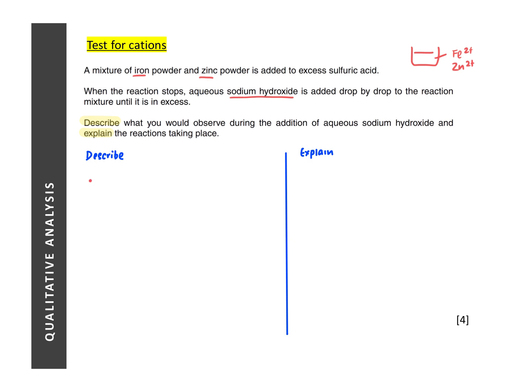So description will be, you will see a dirty green or green PPT, insoluble in excess sodium hydroxide. For zinc, you will see a white PPT, soluble in excess sodium hydroxide to give a colorless solution.